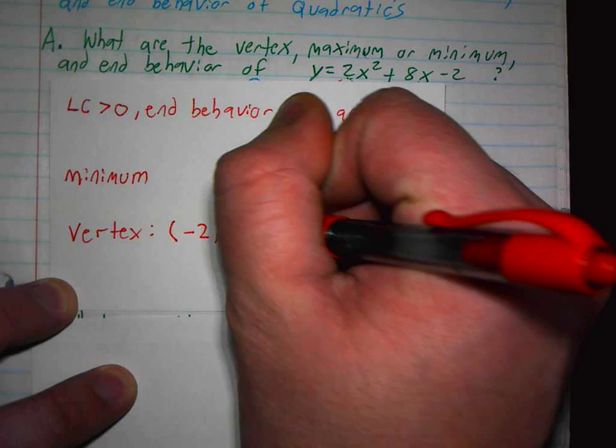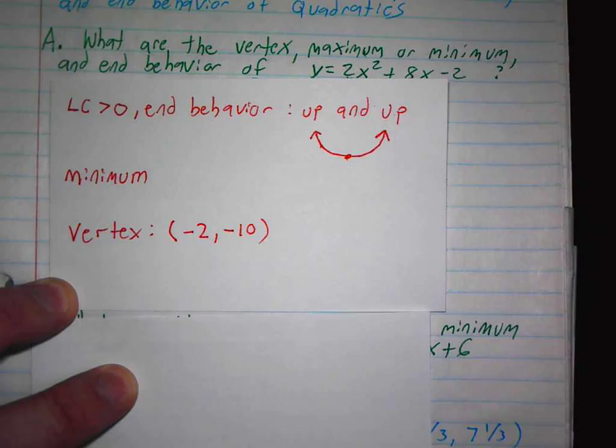And my minimum, or maximum, will be that number. So my minimum is negative 10. That is my smallest y-value it could possibly be.